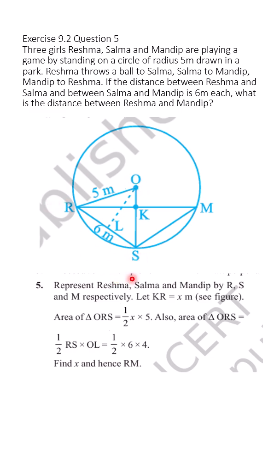We can write the area of triangle ORS in two ways. One is half into base into height. So if we take base as OS, OS's value is 5 meters. We will take RK as RK. We have assumed X. So half into X into 5.